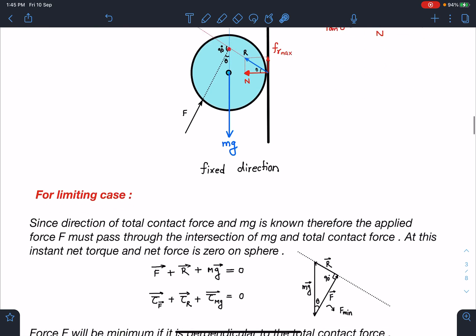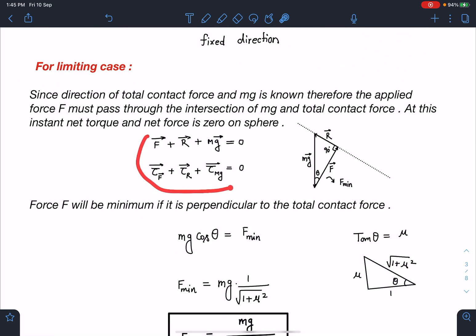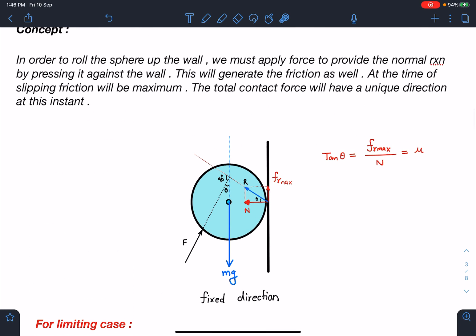Now for limiting case, we know that friction is maximum. So total torque and total force is 0. If we try to draw the vector diagram, I know mg its direction is fixed, magnitude is known and this r, its direction is fixed. Its magnitude is not known to us, direction is fixed. Now this f will be somewhere on this line in order to complete that vector triangle. Minimum value will come when this f will become perpendicular to this line. If you see here, this angle is angle of friction theta. So here this angle is also theta. That means from the vertical, this f vector is making angle of theta.